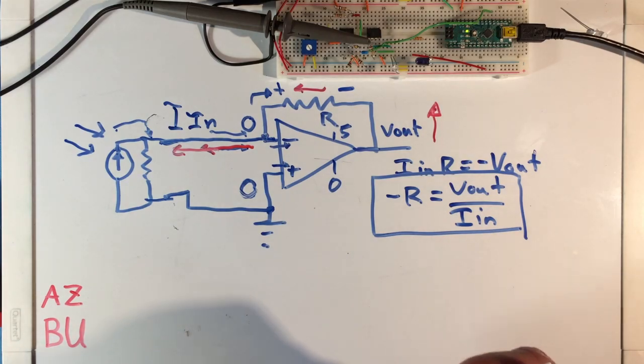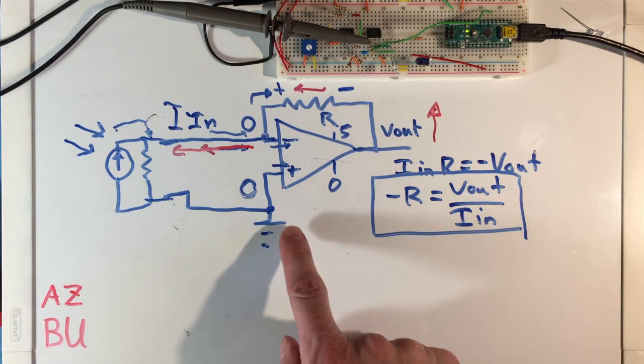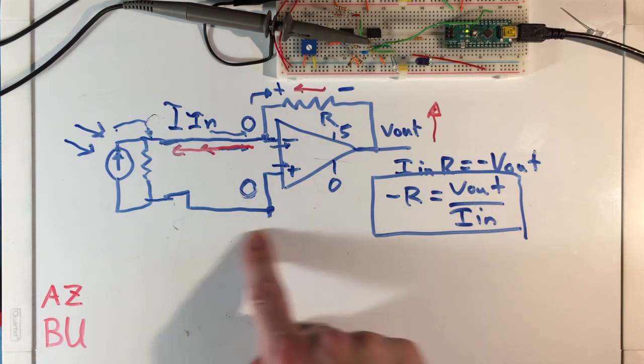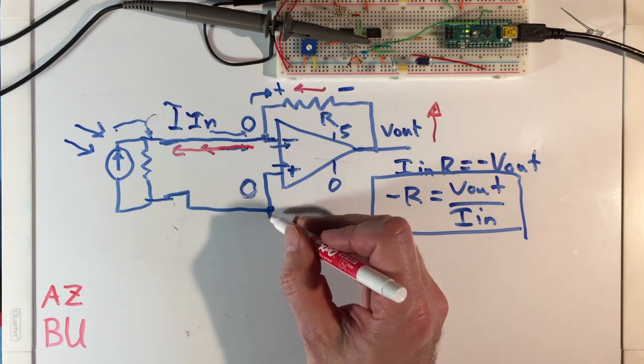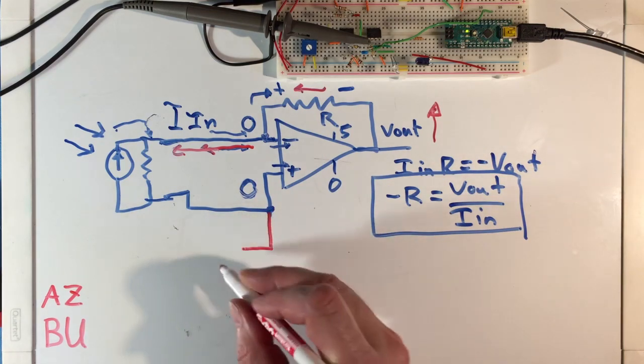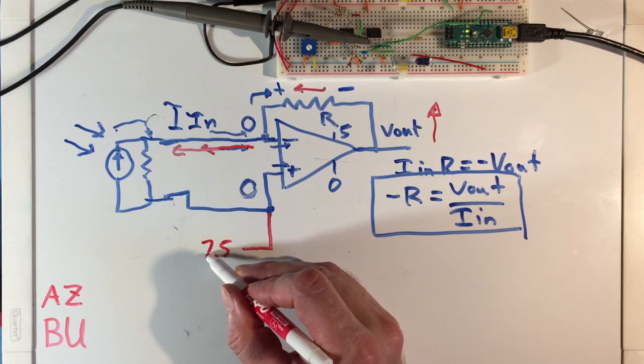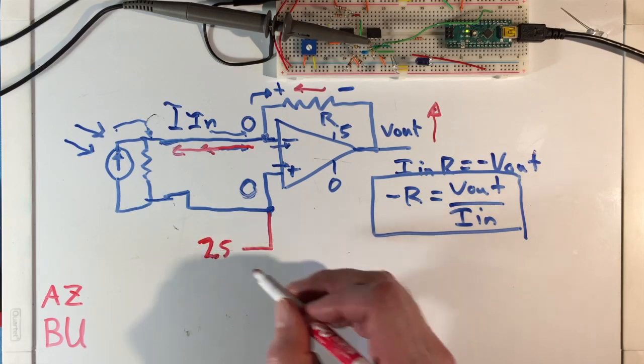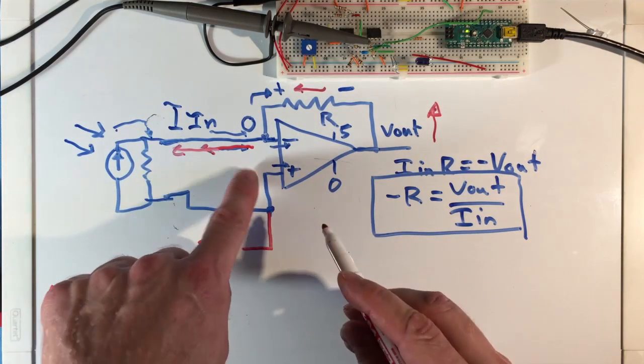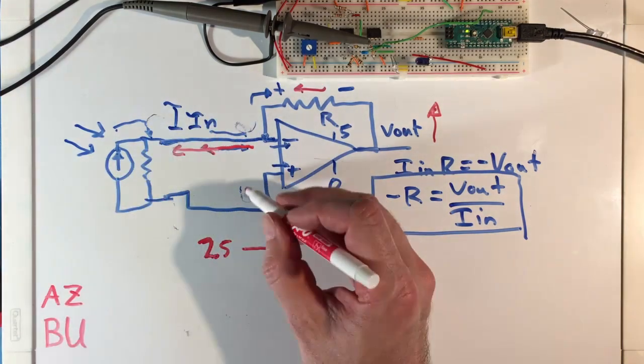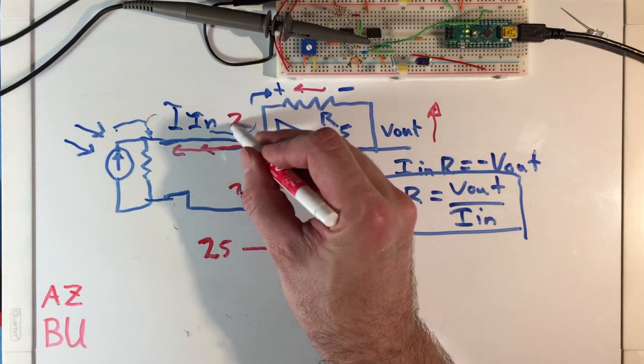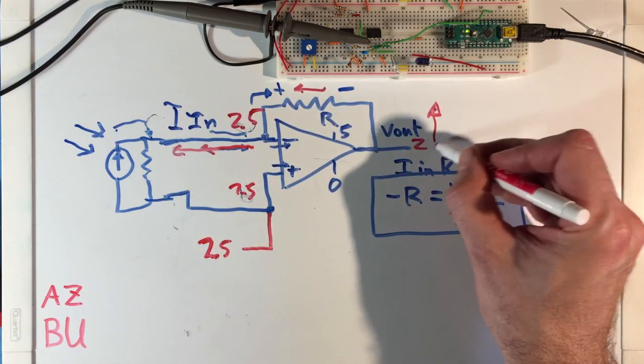But what we're going to do is we're actually going to use our rail splitter circuit. We built one in some of the earlier labs. Instead of referencing the non-inverting input to zero, we're going to connect it to one half of our power supply voltage, which is really 2.5 volts. When we do that, if no current's coming in, instead of everybody being at zero, they're all going to be at 2.5. The voltage here is going to be at 2.5.